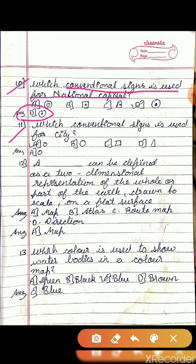Question 11: Which conventional sign is used for a city? The options include a circle, a big circle, a square, and a triangle. The answer is A, a circle.